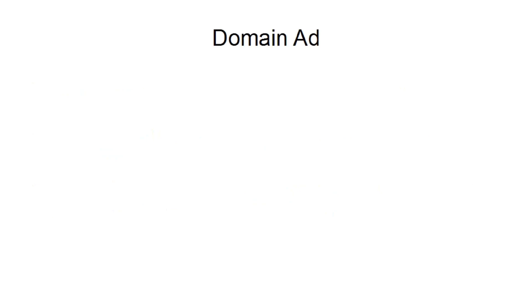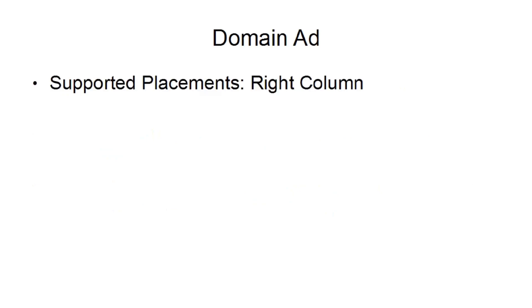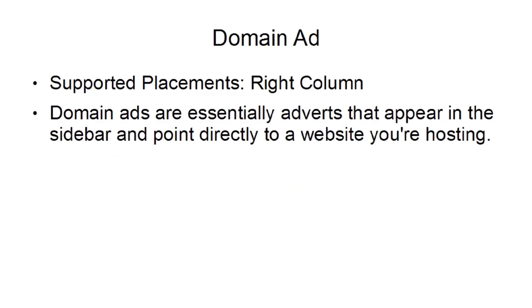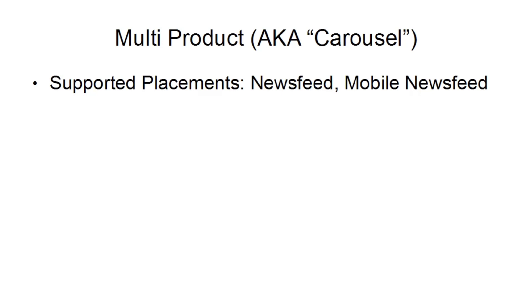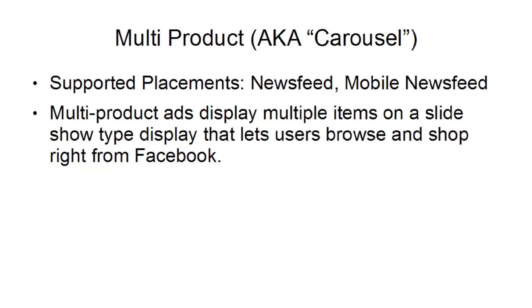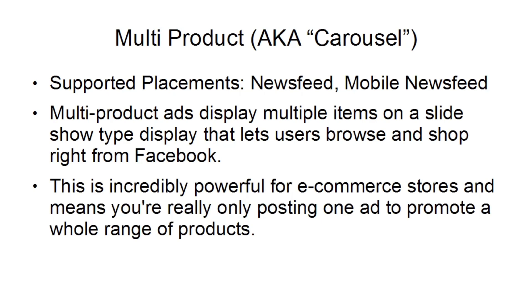Then there's a domain ad. The supported placement is in the right column. Domain ads are essentially adverts that appear in the sidebar and point directly to a website that you're hosting — similar to a Google AdSense ad. They are perhaps the simplest form of ads, composed of a simple heading and a block of text. Then there's the multi-product ad. The supported placements are the news feed and the mobile news feed. Multi-product ads display multiple items on a slideshow-type display that lets users browse and shop right from Facebook, which is incredibly powerful for e-commerce stores.